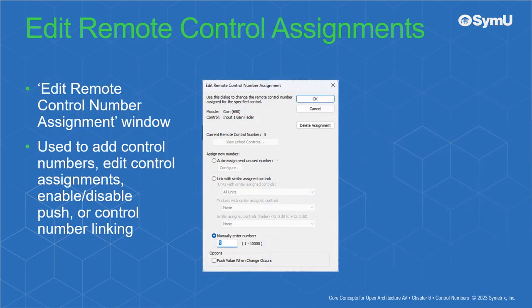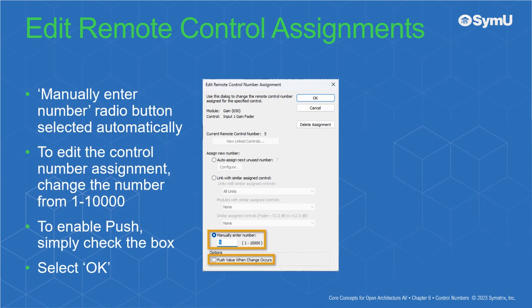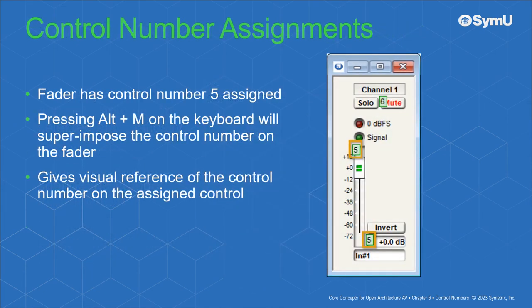The Edit Remote Control Number Assignment window is used to add control numbers, edit control assignments, enable or disable push, or control number linking. The manually enter number radio button is selected automatically. To edit the control number assignment, change the number — for example from 1 to 10,000. To enable push, simply check the box, then select OK. In this example, the fader has control number 5 assigned. Pressing Alt plus M on the keyboard will superimpose the control number on the fader, giving a visual reference of the control number on the assigned control.